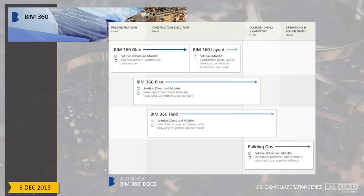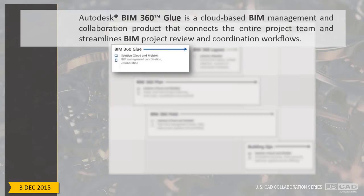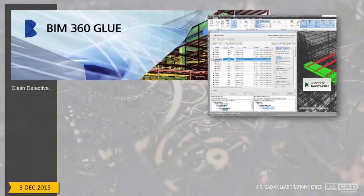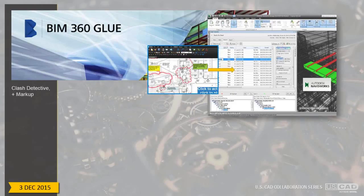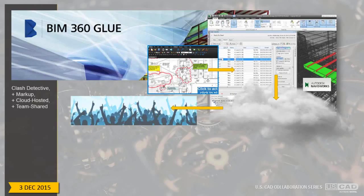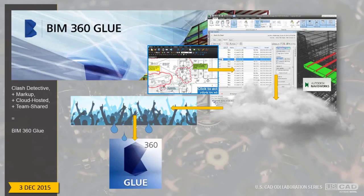Another product just announced at Autodesk University is BIM 360 Docs — the missing link. It's going to be the umbrella mechanism for the whole platform, collecting emails and all the conversations that occur throughout a project into a more continuous stream. As for Glue, Autodesk defines it as a cloud-based BIM management and collaboration product that connects the entire project team and streamlines BIM project review and coordination workflows — essentially Clash Detective out of Navisworks plus markup and review, thrown on the cloud and shared with the team.